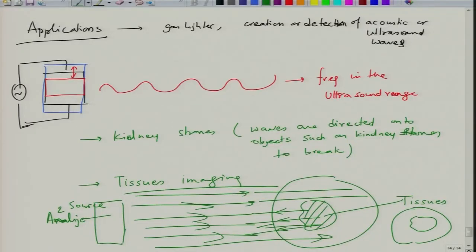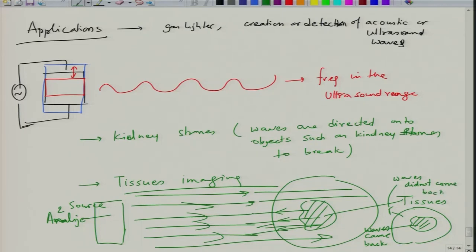The reconstructed image shows regions from which waves came back partially or completely, and regions from which waves did not return. Using image processing, this can lead to imaging of tissues, babies, and various internal organs in the body. This is a very important application of piezoelectric materials, covering both invasive as well as non-invasive methods.